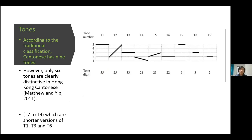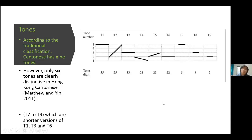Now we are going to talk about tones in terms of phonology, because it is the most intriguing part of Cantonese. Many people say there are nine tones in Cantonese; however, linguists would normally agree that there are six distinctive tones in Hong Kong Cantonese. The seventh, eighth, and ninth tones are normally perceived as the shorter versions of tone one, tone three, and tone six.